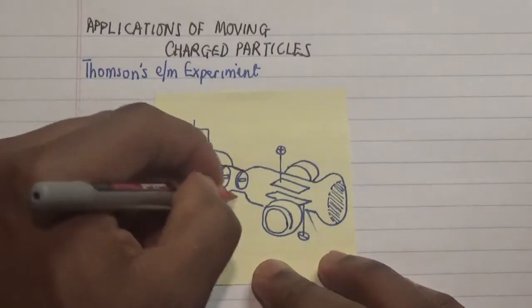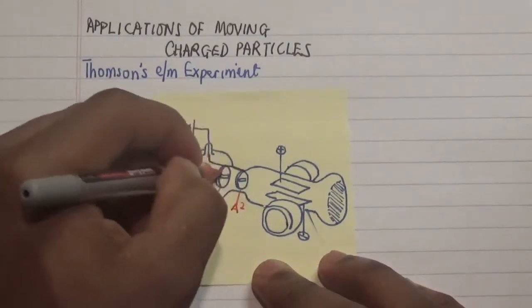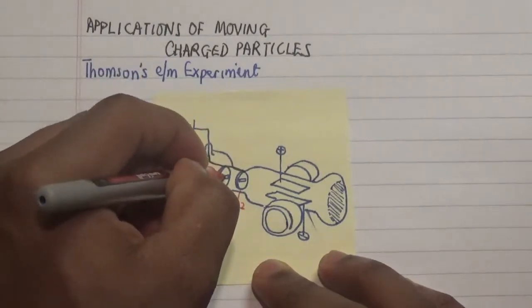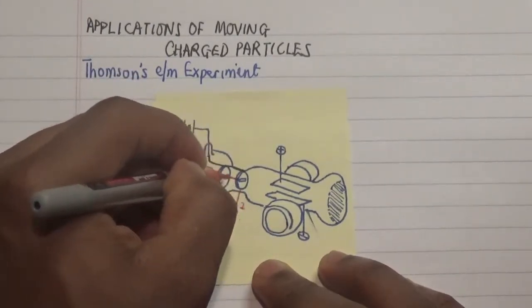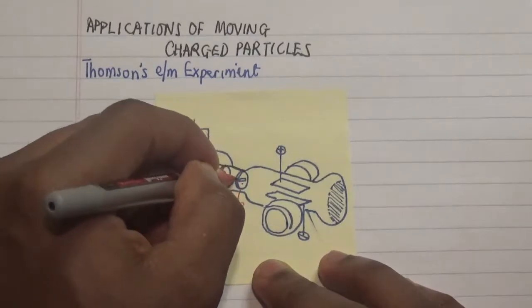I'll call this anode 1 and this one anode 2. So in between these anodes here we have streamlined electrons passing between this particular electrode or anode and this other anode here.